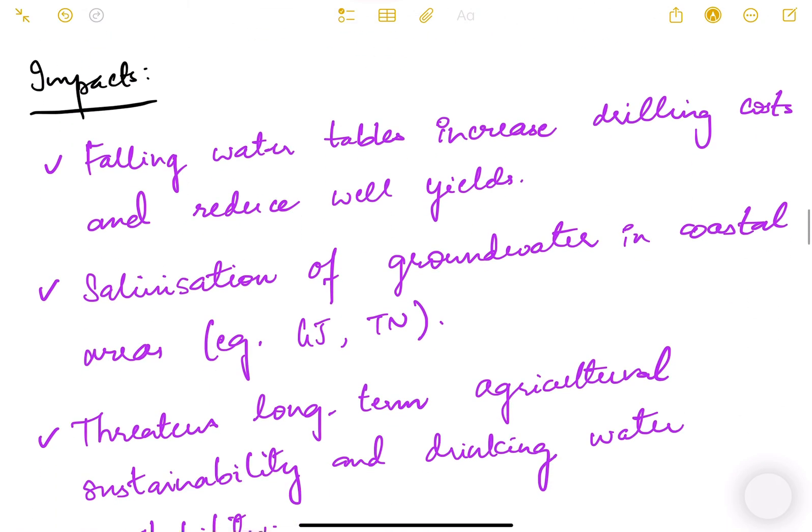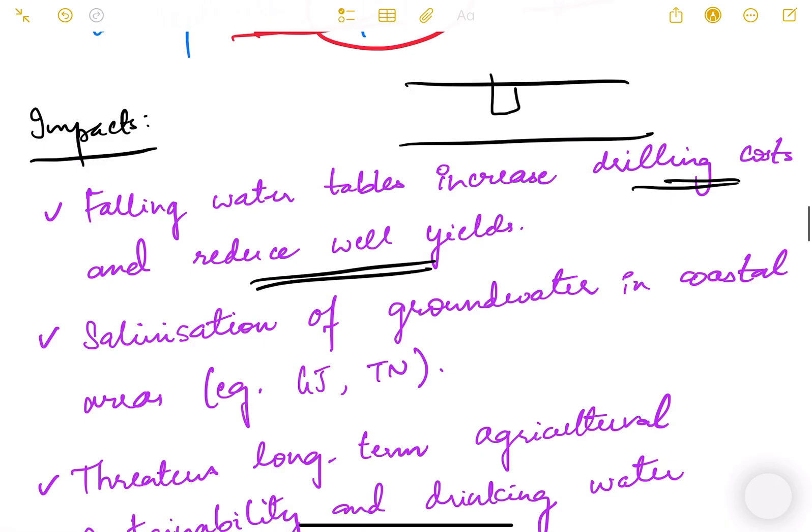The impact of groundwater depletion is that falling water tables increase drilling costs and reduce well yields. For example, 30 years ago they used to get water at 50 feet below the ground. Now they have to dig deeper because the water table has fallen. Previously the water table was still at this point, but now it has come to this point, so now they have to dig maybe 100 feet to get water.